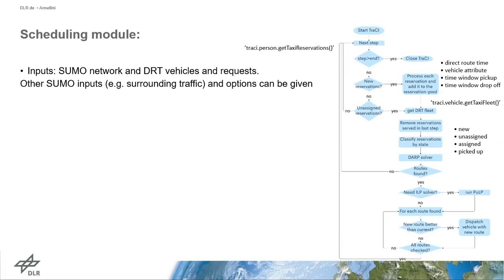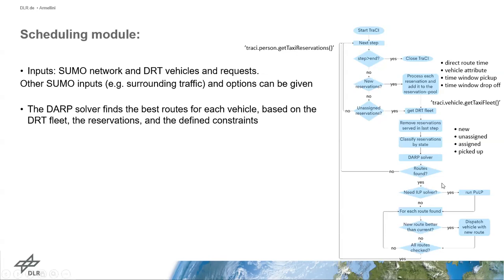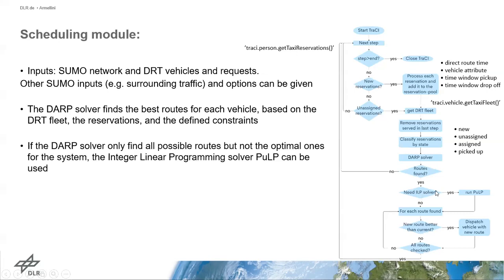The next step is to call the dial-a-ride problem solver, or DARP solver, which is responsible for finding the best routes for each vehicle based on the DRT fleet, the reservations, and the defined constraints. The integer linear programming step is actually part of the DARP solver. There are many methods to find these routes that apply an ILP solver, so I integrated the Python ILP solver PuLP. If you want to add a new DARP solver method, you can use this ILP solver from the scheduling module.